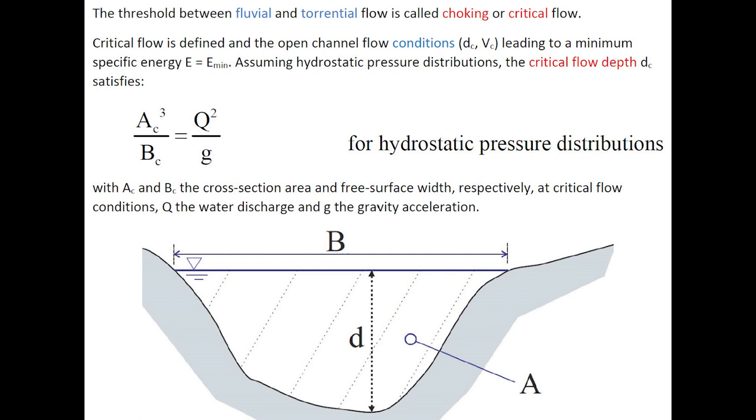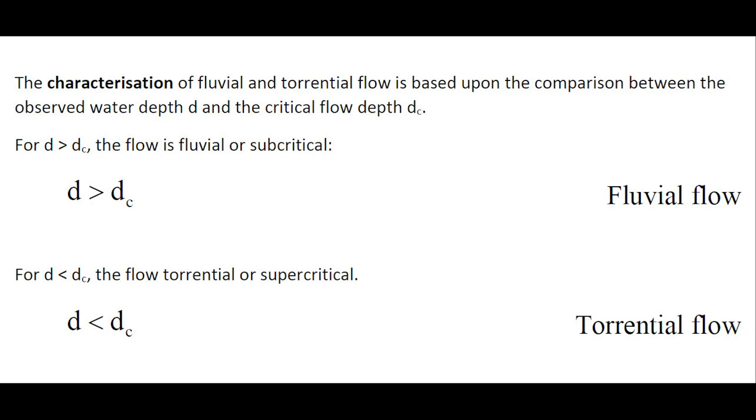The threshold between fluvial and torrential flow is called choking or critical flow. Critical flow is defined when the open channel flow conditions lead to the minimum specific energy. Assuming hydrostatic pressure distribution, the critical flow does satisfy the following equation: A cubed over B equals Q squared over G, where A is the cross-section area, B is the free surface width, Q is the discharge, and G is the gravity acceleration.